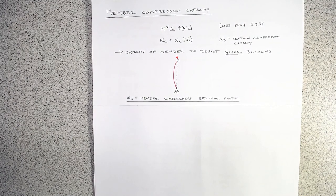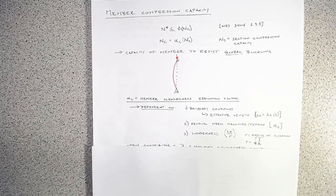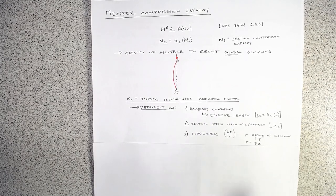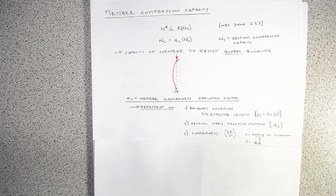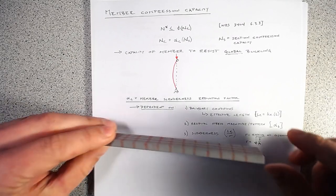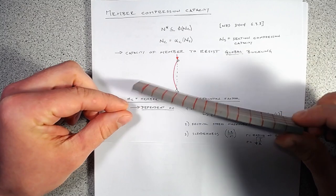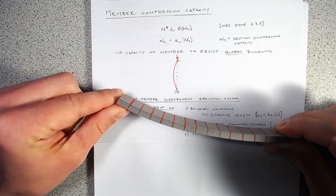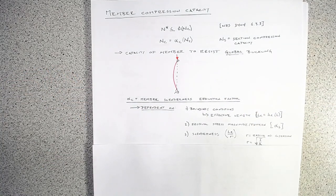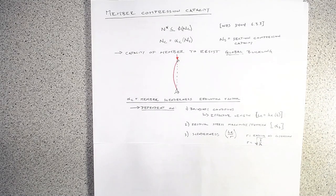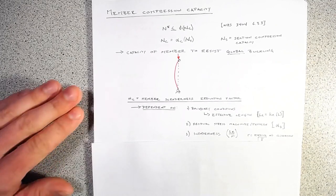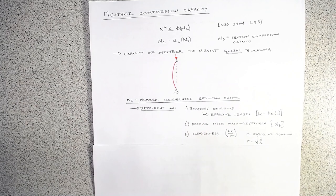Alpha_c is dependent upon three things. The first is boundary conditions — essentially the effective length. Recalling our lecture on boundary conditions and Euler buckling, there's a significant difference in critical buckling load between pin-pin, fix-fix, and fixed-pinned configurations. The effective length factor k_e accounts for those different boundary conditions and their different global buckling capacities.